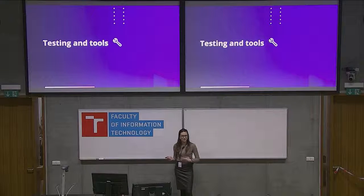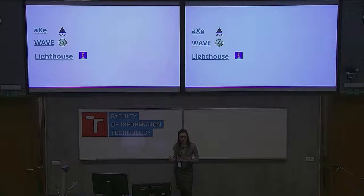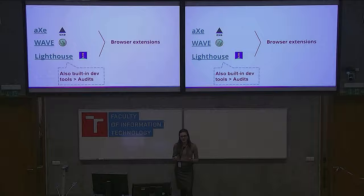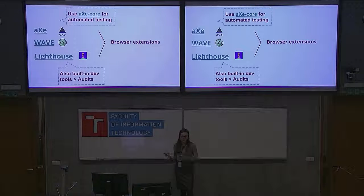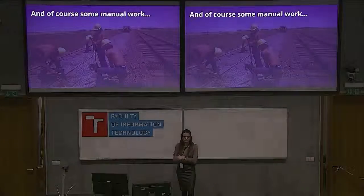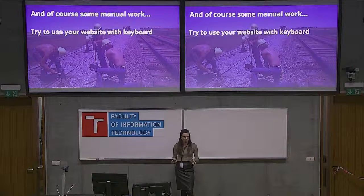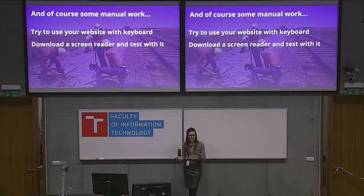Testing tools: when implementing accessibility, it's important to test it. There are browser extensions like Axe, Wave, and Lighthouse — which is built into DevTools in the Audit tab — with many tests you can run against your website to check compliance with accessibility standards. For automated testing on CI, the Axe Core open-source library can check that you haven't broken accessibility. Also do manual testing: try navigating your website using only the keyboard. Download a screen reader, put on a sleeping mask, go to Google, and try to search something — just try to feel what it's like.